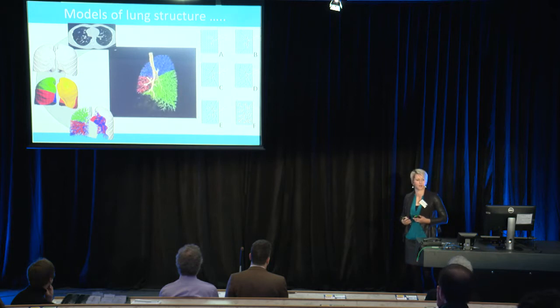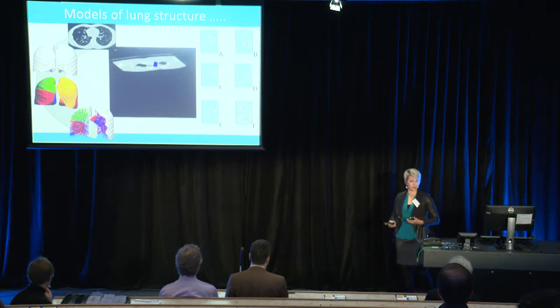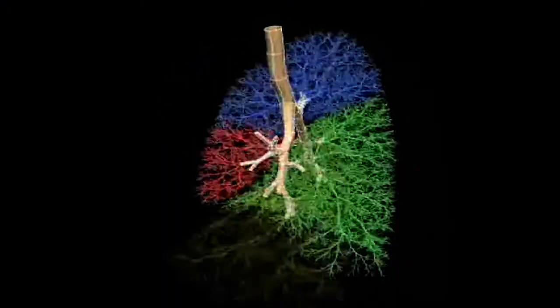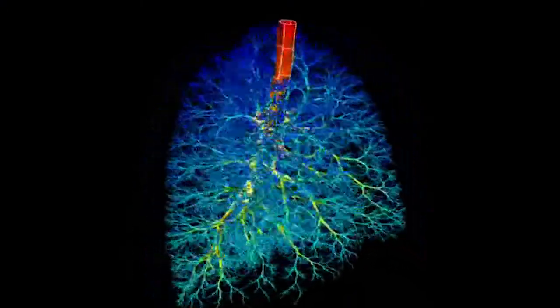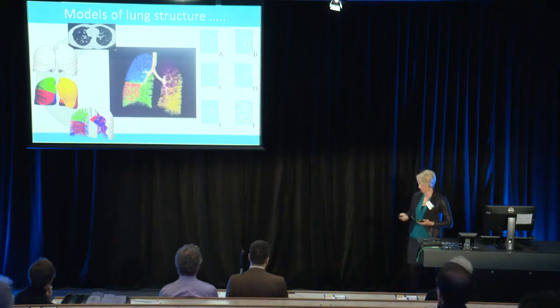Why does that end up being important? We know that there are significant differences between species in terms of this branching geometry. If you're thinking about drug discovery, drug development, and trials — initially animal trials — if you are testing your drug dispersion in a very different geometry to what you are hoping it's going to end up in, which is human, then you can end up with results that don't translate well to human physiology. That's just one of the purposes.